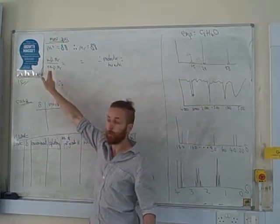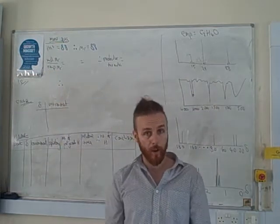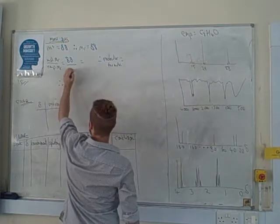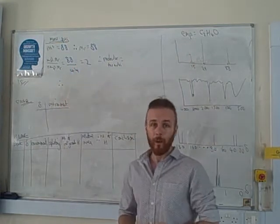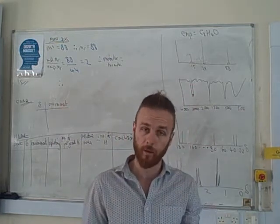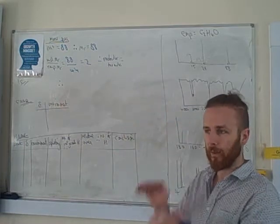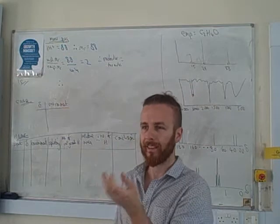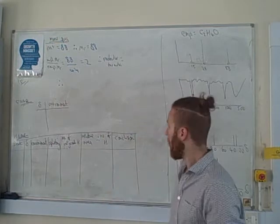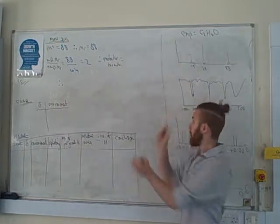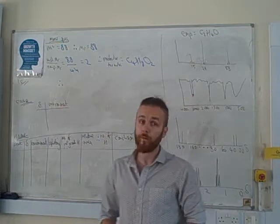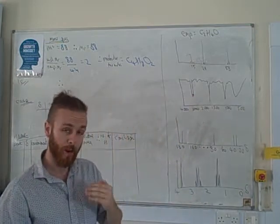We can find our ratio of molecular formula MR to empirical, and that is 88 over 44, which comes to 2. This tells me my molecular formula is twice as big as my empirical. I always imagine the molecular formula as a pizza, and empirical formulas as slices of that pizza. So my molecular formula must be twice: C4H8O2. We're pretty much done with mass spec for now. We'll come back to that graph right at the end.